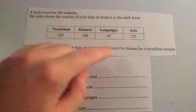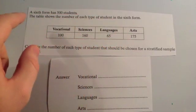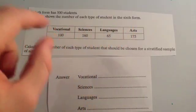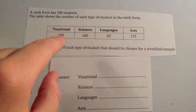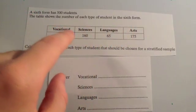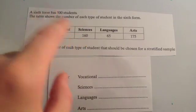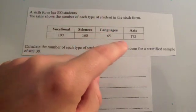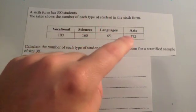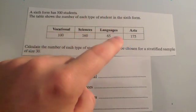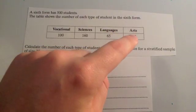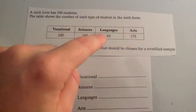For instance, if we looked at this set of information, we've got a sixth form of 500 students. If we're doing a sample of 30, it wouldn't be fair to do a quarter of the 30 as vocational, a quarter as science, a quarter as languages, and a quarter as arts. Because a lot more students do arts than languages, so you'd want more arts people than languages in your sample.